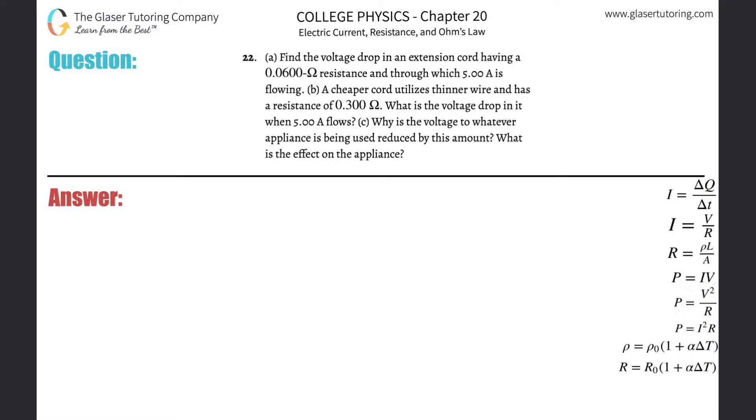Number 22, letter A. Find the voltage drop, which is just the voltage, in an extension cord having a 0.06 ohm resistance and through which 5 amps is flowing. So we've got to find voltage.